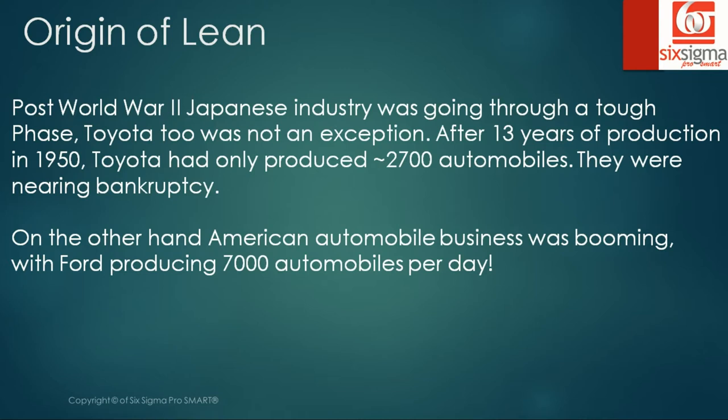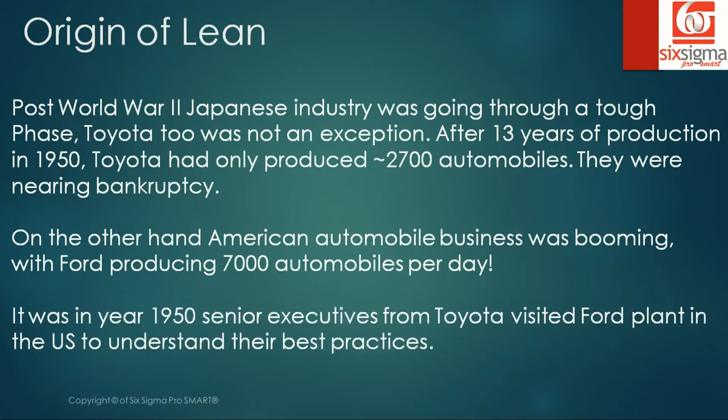So you can see the difference — while Toyota in 13 years had produced 2,700 automobiles, Ford was producing 7,000 automobiles per day. Such a large difference in their production. So in the same year, senior executives from Toyota visited the Ford plant in the United States to understand their best practices.